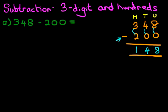And we have our answer. Three hundred and forty-eight minus two hundred is one hundred and forty-eight. That is correct — we get a nice big tick.